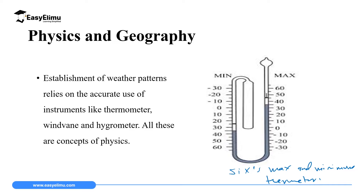We also have things like wind vanes and hydrometers — instruments which use the knowledge of floating and sinking of bodies, which can be used to measure the relative density of liquids and many other things. So geography borrows the knowledge of physics to explain or to make those weather instruments and many other things.